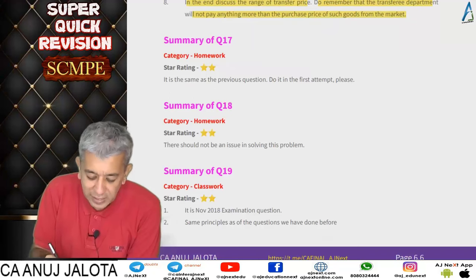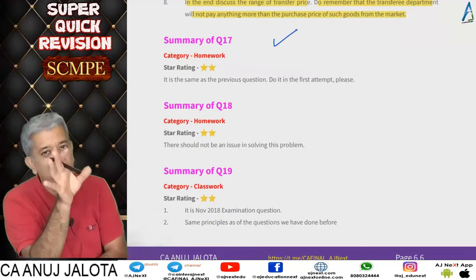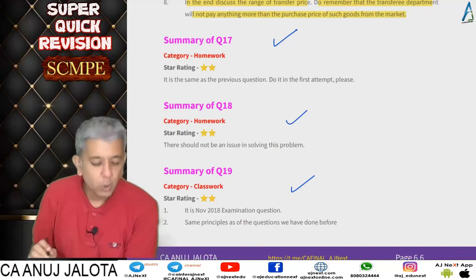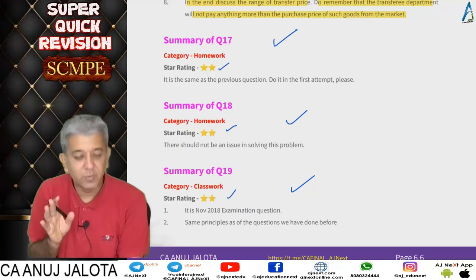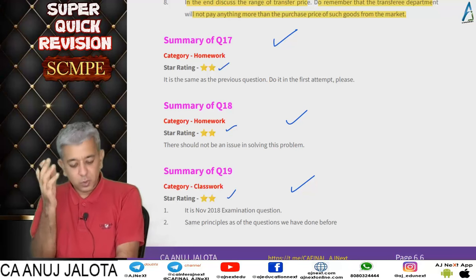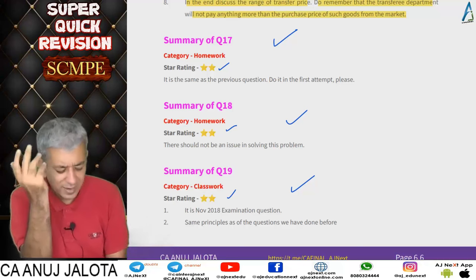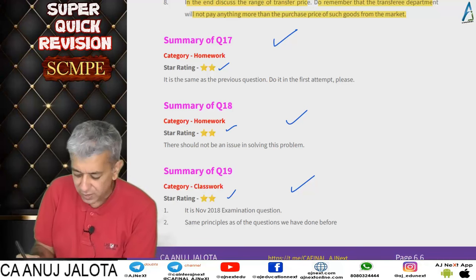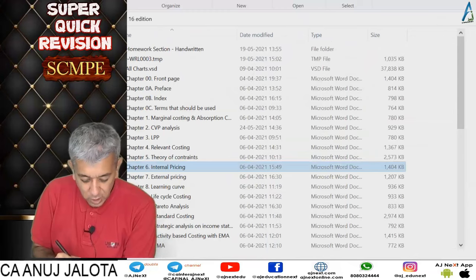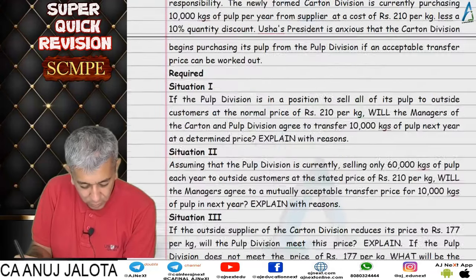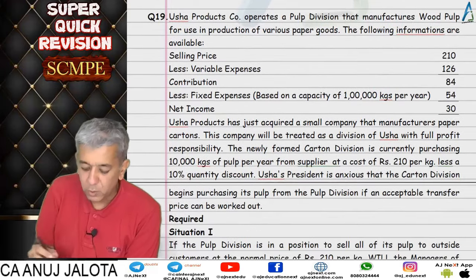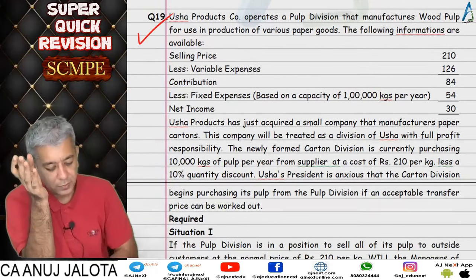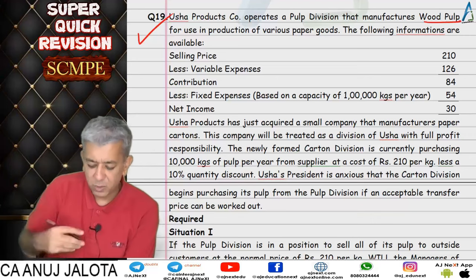Question 17 was exactly the same as 16 and was given as homework. Questions 17 and 18 are both two-star questions that you should solve as soon as possible. Question 19 was solved in class — not a homework question. The first company makes wood pulp and acquired a small company that makes paper cartons, which needs wood pulp. We explored the option of the acquired company buying wood pulp internally.